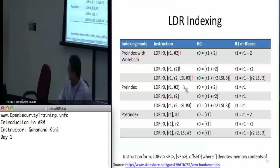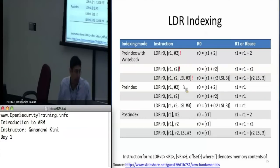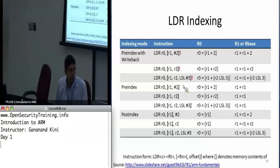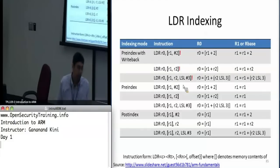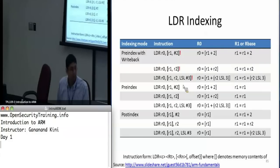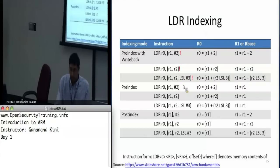Pre-indexed, which we've already seen, just adds the offset and doesn't write the address back into the base address register. You can also do shifting here — it uses the calculated value but won't write it back. Post-indexed does the same as pre-indexed with writeback, but you specify the offset outside the square brackets followed by a comma.